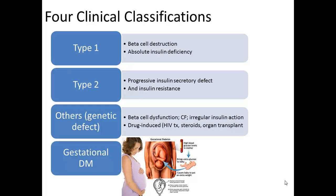Other types of diabetes are due to causes such as genetic defects in beta cell function, genetic defects in insulin action, diseases of the exocrine pancreas such as cystic fibrosis, and drug or chemical induced cases such as in the treatment of HIV or after organ transplant — all of which you may encounter in clinical practice.